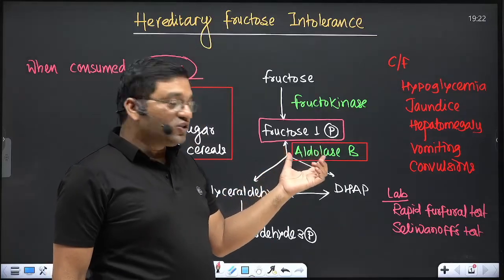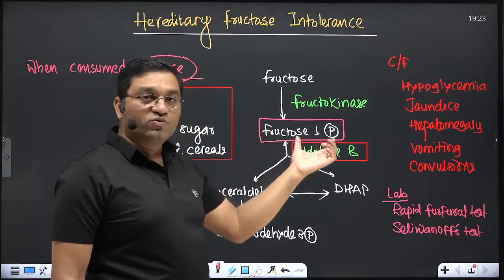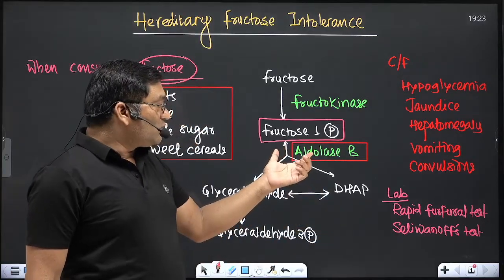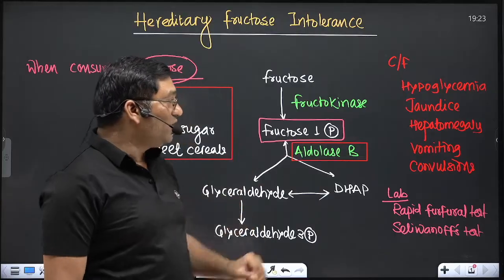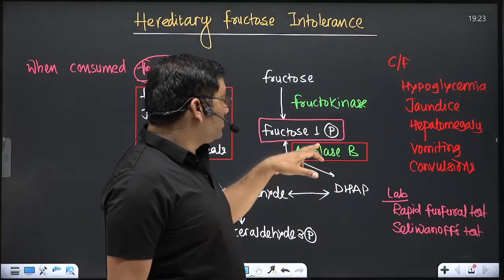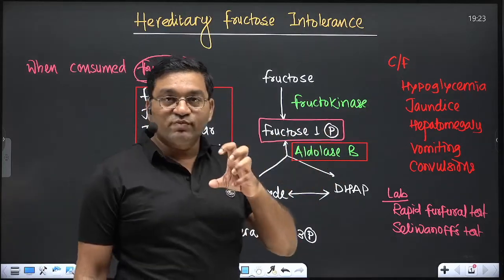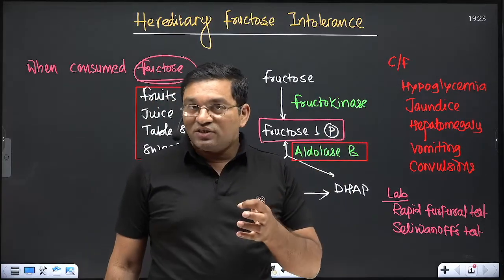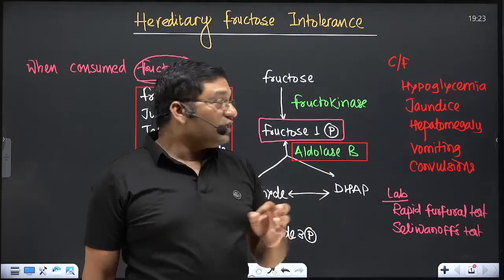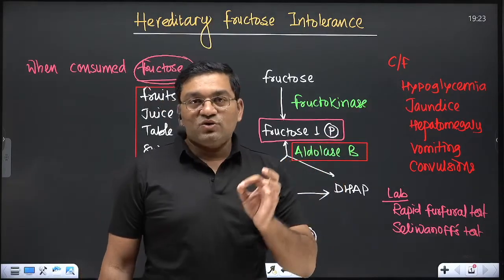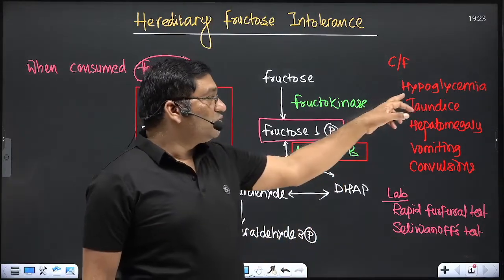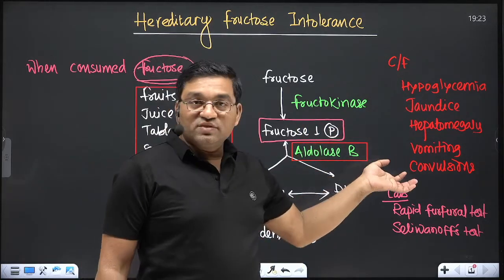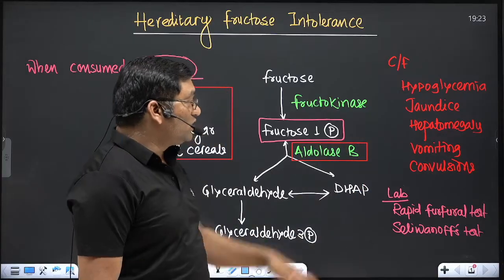Aldolase B converts fructose-1-phosphate into glyceraldehyde and DHAP (dihydroxyacetone phosphate). When this reaction is blocked, fructose-1-phosphate accumulates. In the liver, this causes hepatomegaly, decreases bilirubin conjugation leading to jaundice, and inhibits glycogen phosphorylase — thereby inhibiting glycogenolysis — which causes hypoglycemia and CNS manifestations.